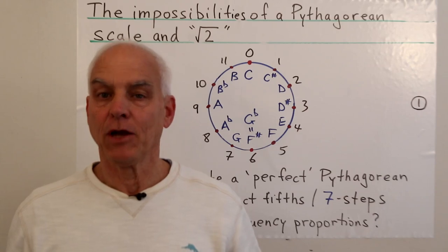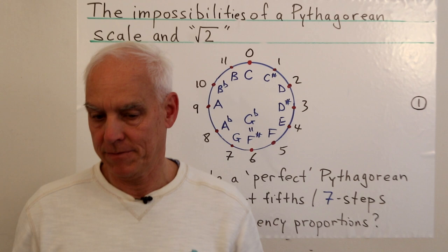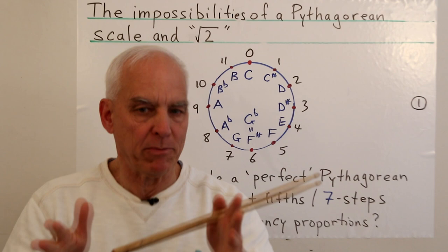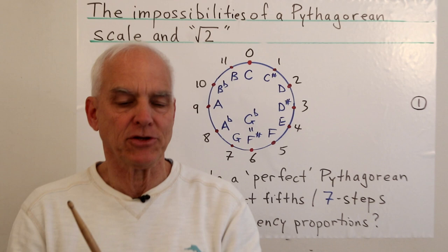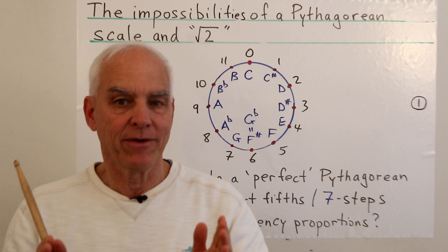Hello everyone, I'm Norman Wahlberger and we're talking about mathematics and music. Today we're going to look at an attempt to create a perfect scale from a Pythagorean point of view, and we're going to see that essential number-theoretical difficulty I talked about last time emerging in a different way, as we look at the cycle of fifths and the cycle of fourths and see how the two ends don't really end up matching up.